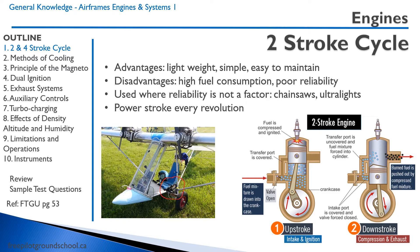The two-stroke engine does have some very important disadvantages. One is high fuel consumption, and the second is poor reliability. A typical four-stroke engine lasts about 2,000 hours before it needs to be overhauled, while a two-stroke engine lasts about 500 hours. Talk to people who do a lot of ultralight flying, and almost all of them who've been doing it for a considerable length of time have had some sort of engine failure. It's typically used where reliability is not a factor, such as chainsaws and ultralight aircraft.